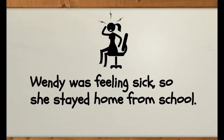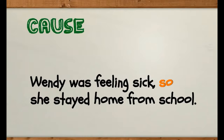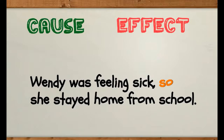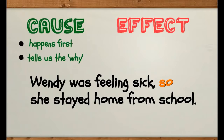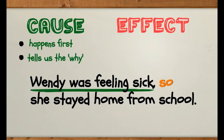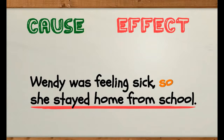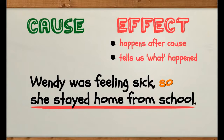Wendy was feeling sick, so she stayed home from school. Can you see the signal word? That's right — 'so.' Now let's work out which is the cause and which is the effect. Remember, a cause happens first, but not always first in the text, and it answers the question: why did this happen? The cause must be Wendy feeling sick. We know Wendy staying home from school must be the effect because it happened after the cause and tells us what happened.